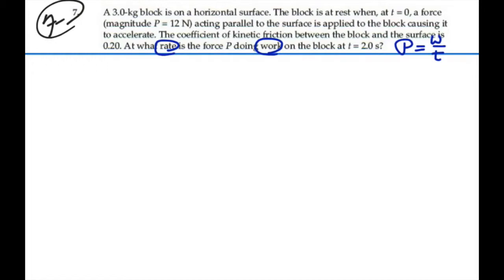In particular, if we're looking for power, then we're looking for the dot product between a force and velocity. In this case, our force P times our velocity, cosine 0, will be our power. So we want to find the velocity of this block at t equal to 2 seconds, and that multiplied by the force P will give us the power.